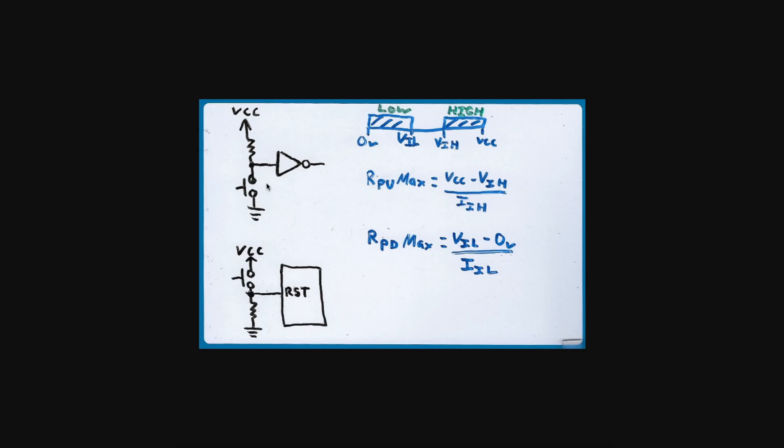With the switch open, and a leakage current through the input, that current is going to go through the pull-up or the pull-down resistor, resulting in a voltage drop across that resistor. And that's going to change the input voltage level seen by the digital circuit.